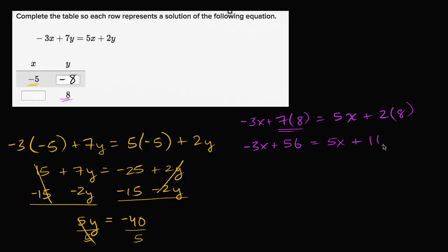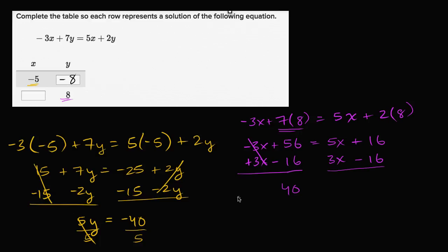That gives us negative three x plus 56 is equal to five x plus 16. To get all the x terms on one side and constants on the other, we add three x to both sides — that cancels the negative three x on the left — and subtract 16 from both sides. So 56 minus 16 is positive 40, and five x plus three x is eight x. We get eight x equals 40, and dividing both sides by eight gives x equals five.